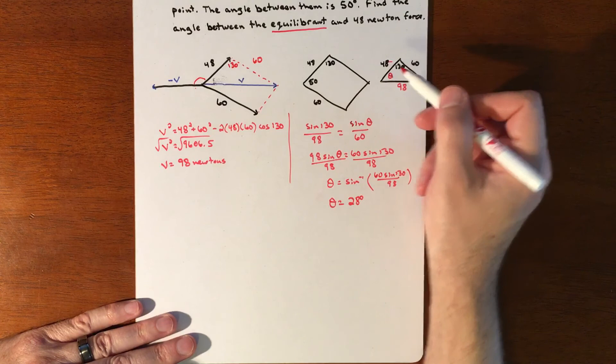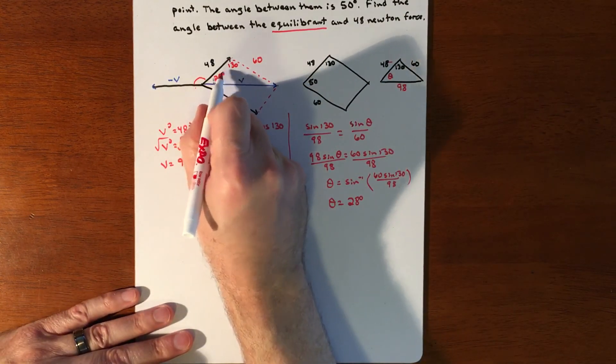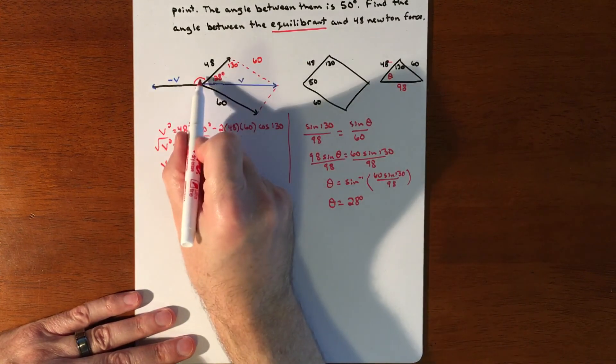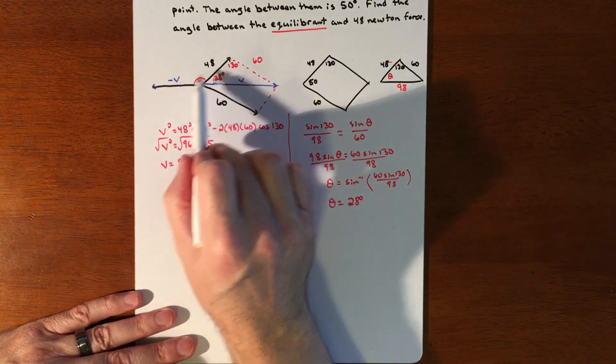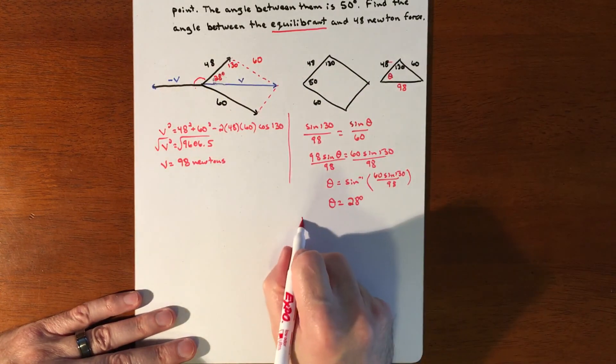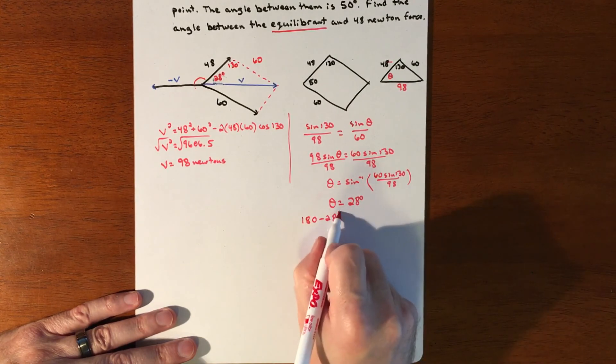Alright, so if theta is 28, we can put that in here. If that's 28, this angle between the equilibrium and the 48 degree vector is going to be 180 minus the 28 degrees.